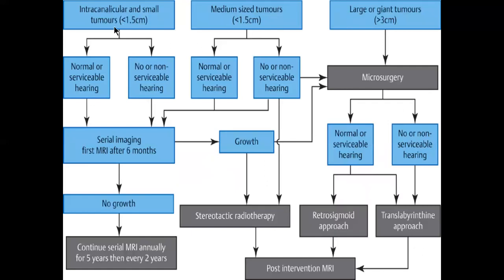Another algorithm: for intracanalicular small tumors less than 1.5 centimetres with normal serviceable hearing, do serial imaging — if no growth, continue surveillance. If there is non-serviceable hearing and tumor growth, go for stereotactic radiosurgery. For medium-sized tumors with normal hearing and less than 1.5 centimetres, do serial MRI; if growth occurs, consider microsurgery or stereotactic radiotherapy. If there is non-serviceable hearing, stereotactic radiotherapy or microsurgery are options. For large tumors, microsurgery is mandatory — retrosigmoid approach for normal hearing, translabyrinthine approach for non-serviceable hearing — followed by regular post-intervention MRI.